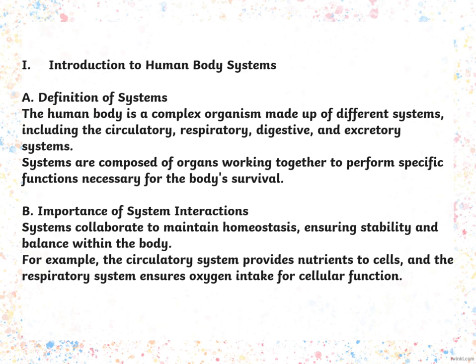Systems collaborate to maintain homeostasis, ensuring stability and balance within the body. For example, the circulatory system provides nutrients to cells and the respiratory system ensures oxygen intake for cellular function.